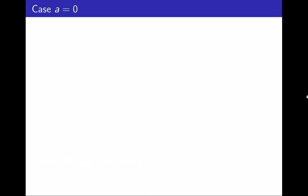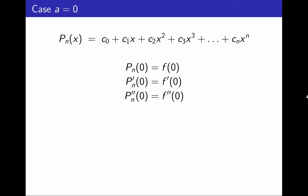For simplicity, let's begin with the case when a equals 0. This is what a generic polynomial with degree at most n looks like. I can choose its coefficients. To this polynomial, I will impose some conditions. I want the value at 0 to be f(0), the derivative at 0 to be f'(0), the second derivative at 0 to be the second derivative of f at 0, and so on, all the way to the nth derivative at 0.